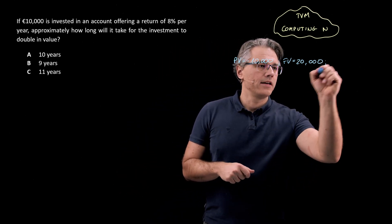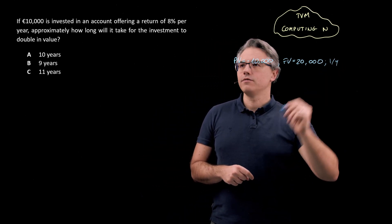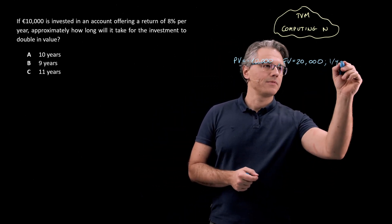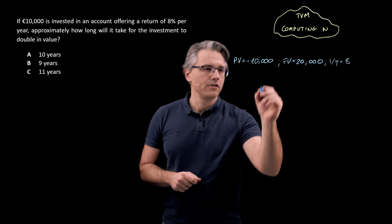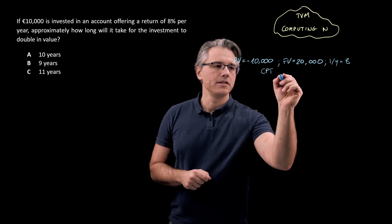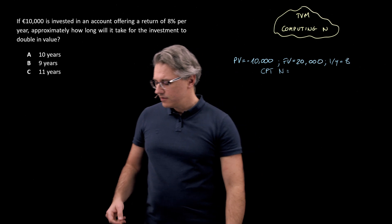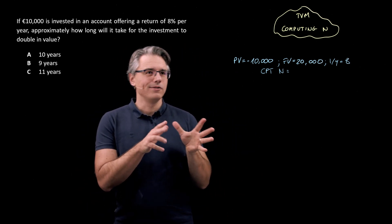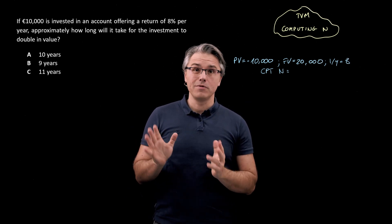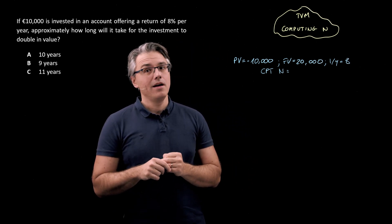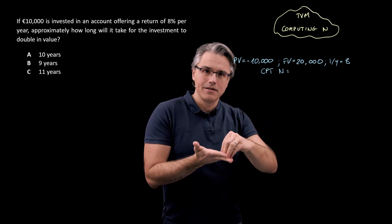Otherwise your calculator will display an error. Our interest rate, or expected/required rate of return, is 8%, so we make I/Y equal to 8, and we're supposed to compute for the number of periods. So CPT, then N. Please note that this time around I'm not showing you the calculator strokes — I'm just stating the relevant inputs, and you should remember how to work with TVM. Provide the number first, then tell the calculator what it is.